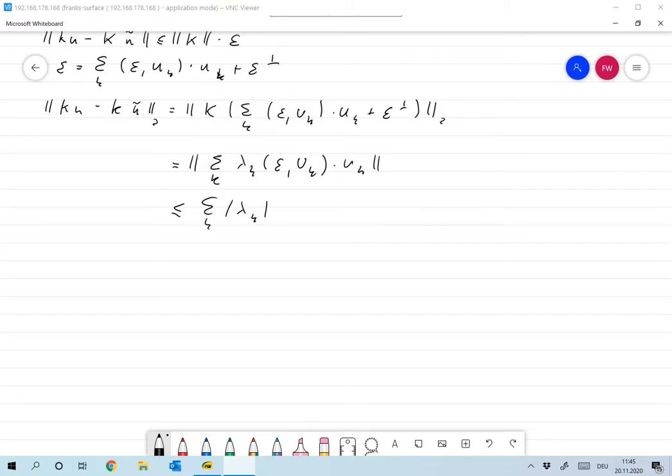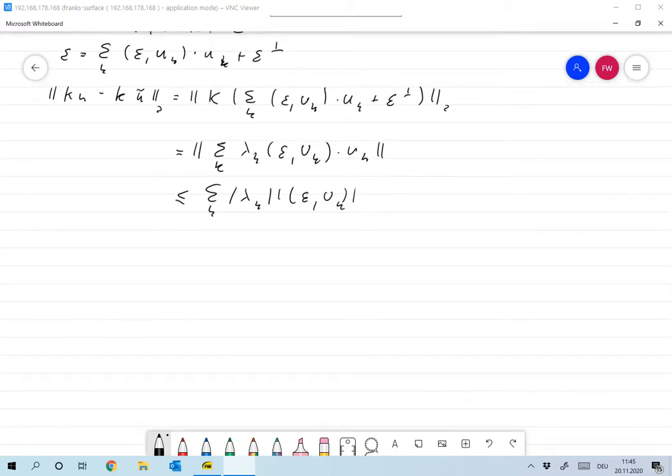Okay, so and this now can be estimated as the sum of all k, absolute value of lambda k, scalar product of epsilon and uk absolute value times the norm of uk. And that's one, right, because that's an orthonormal system.